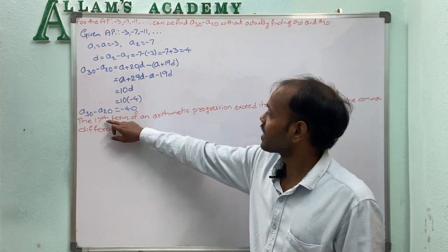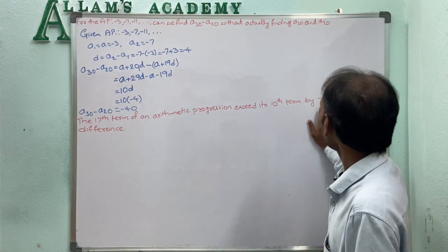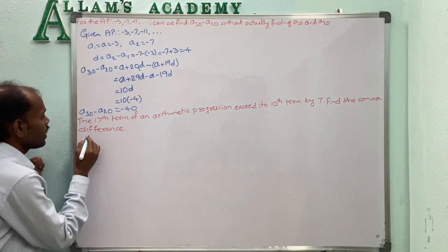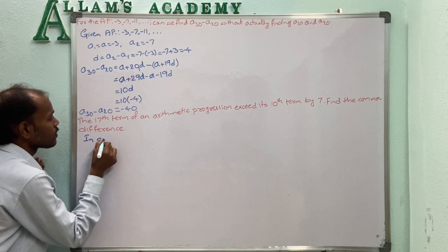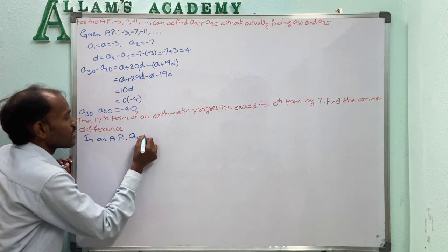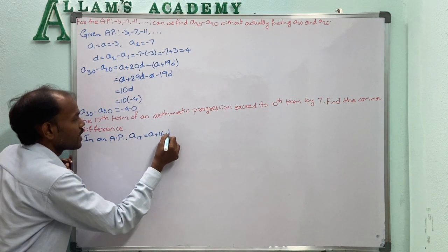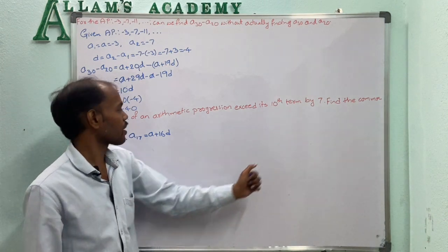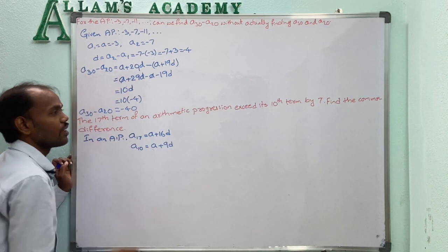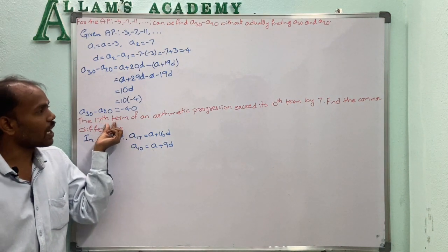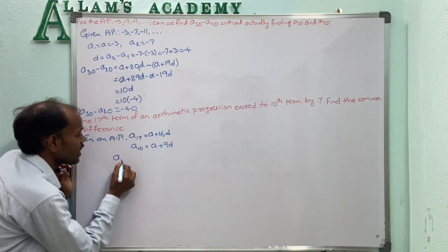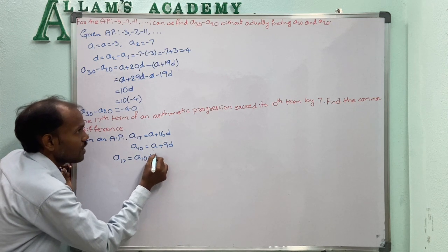Given: the 17th term of an arithmetic progression exceeds its 10th term by 7. Find the common difference. Here the 17th term exceeds the 10th term by 7, meaning we can write A17 equals A10 plus 7.